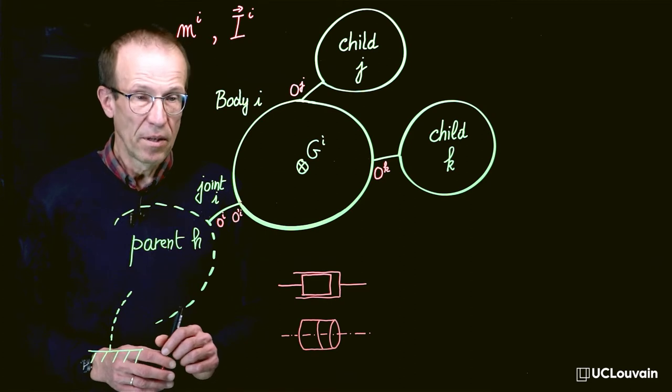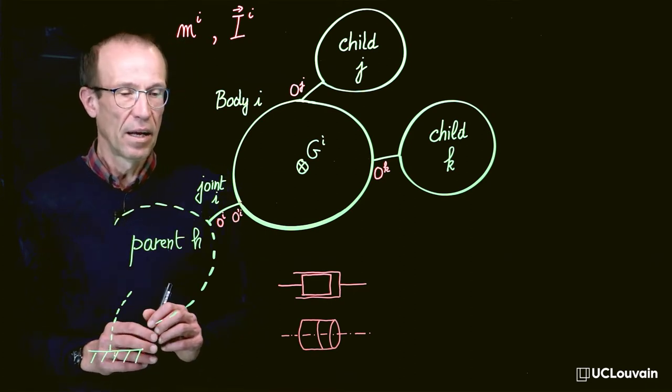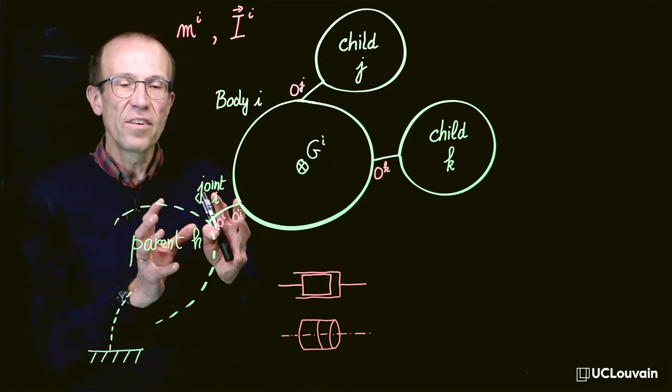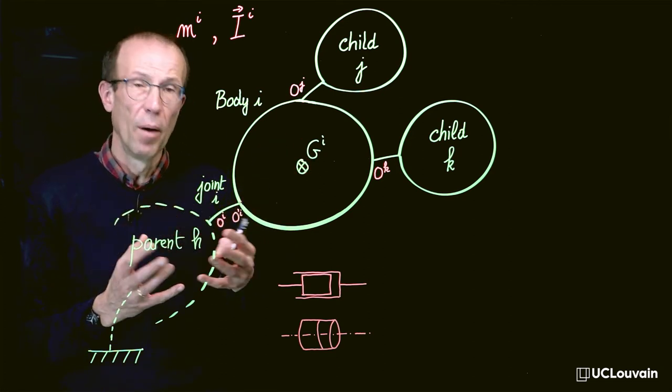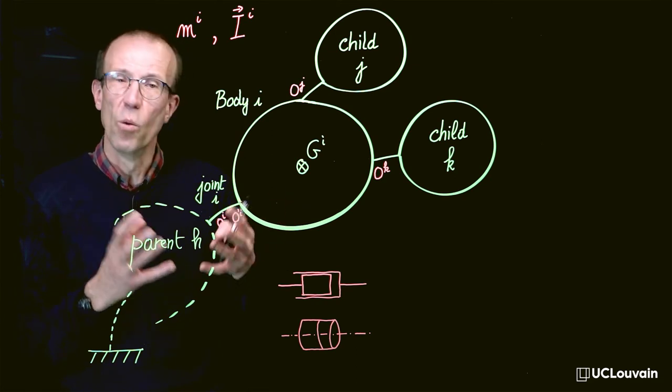A joint represents any mechanical device that confers a relative motion between two bodies. It can be a hinge, a slider, a ball joint, a cardinal joint, or whatever.